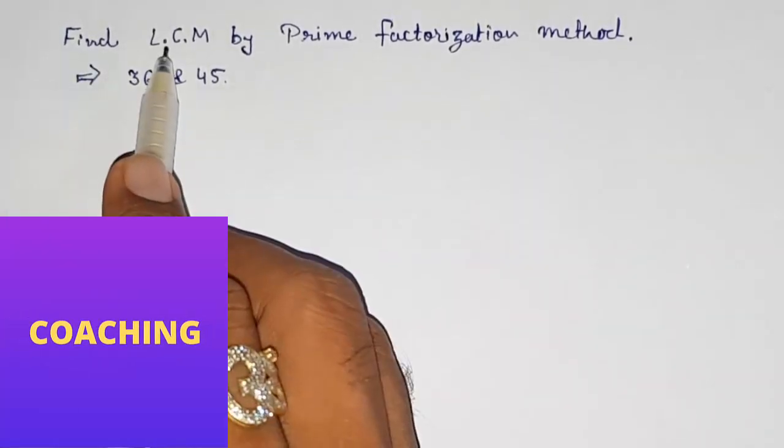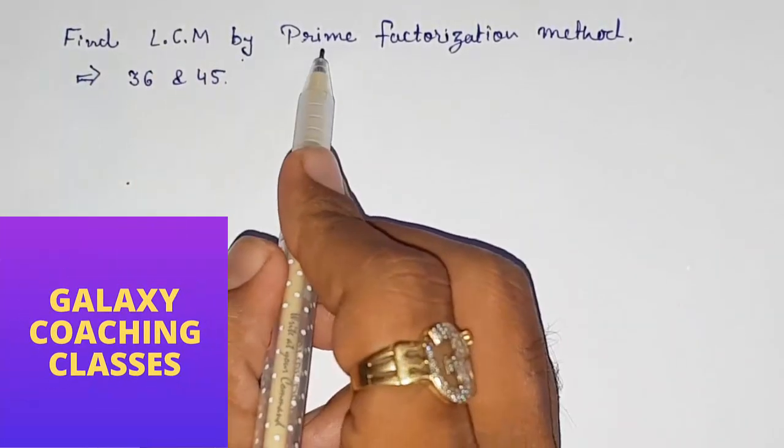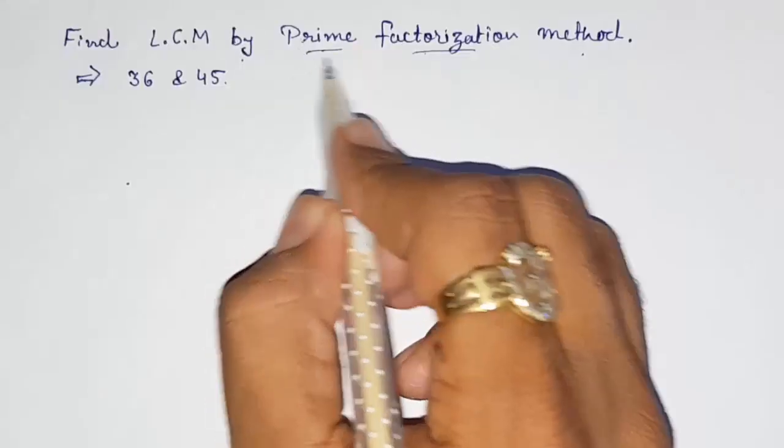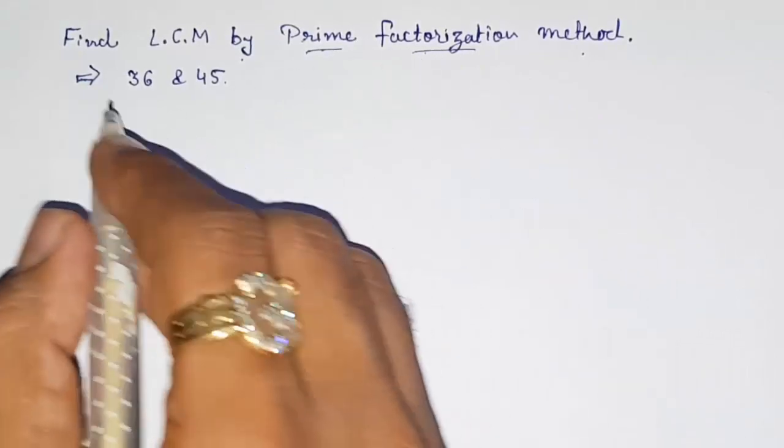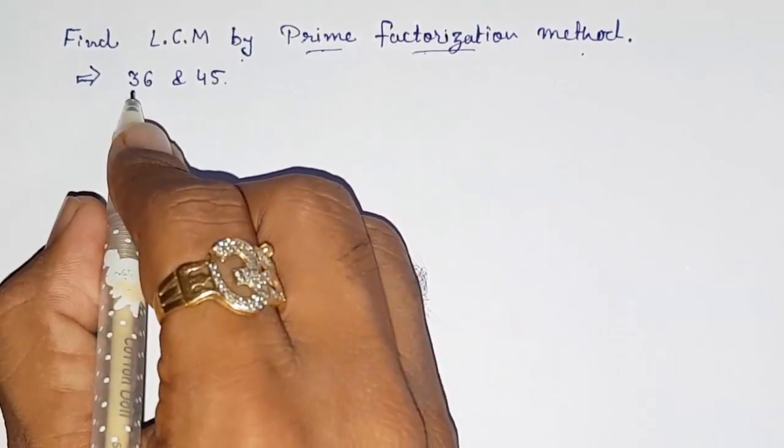Hello friends, today we are going to find LCM by prime factorization method. If you don't know what is prime factorization method, please see my previous videos. Now let us start. First we have to find out the prime factors of 36 and 45.